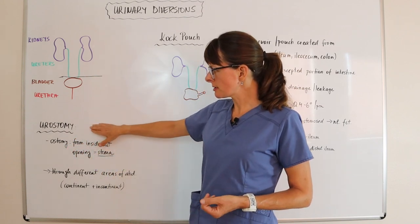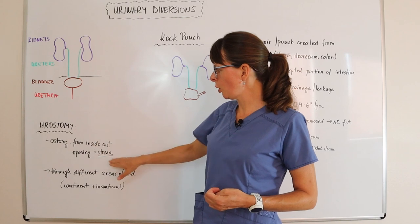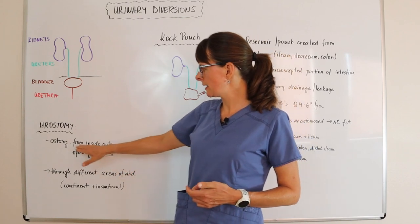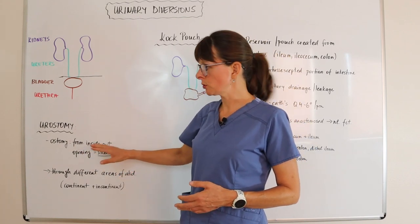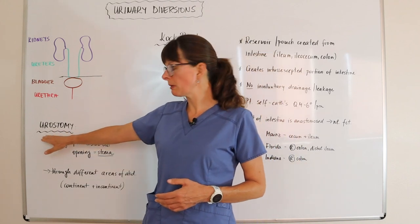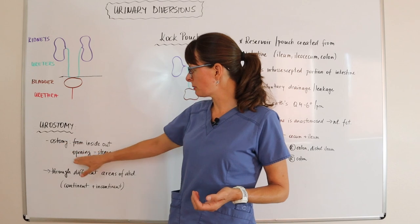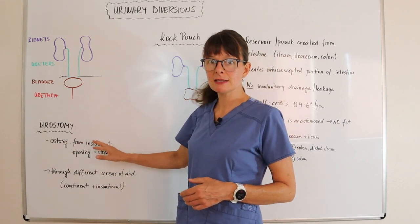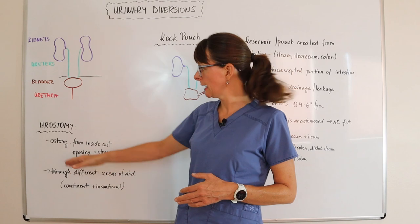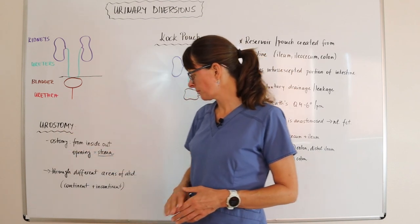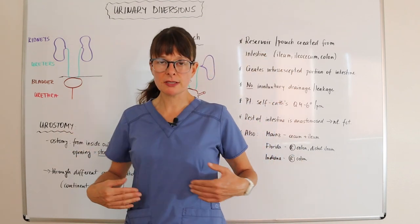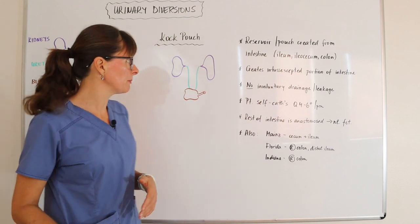A urostomy is an opening, a stoma, that is from the inside of the body to the outside. Uro means pertains to urine and stomy pertains to that stoma. So it's an opening from the inside to the outside of the body that drains the urine, and this can be at different areas of the abdomen.